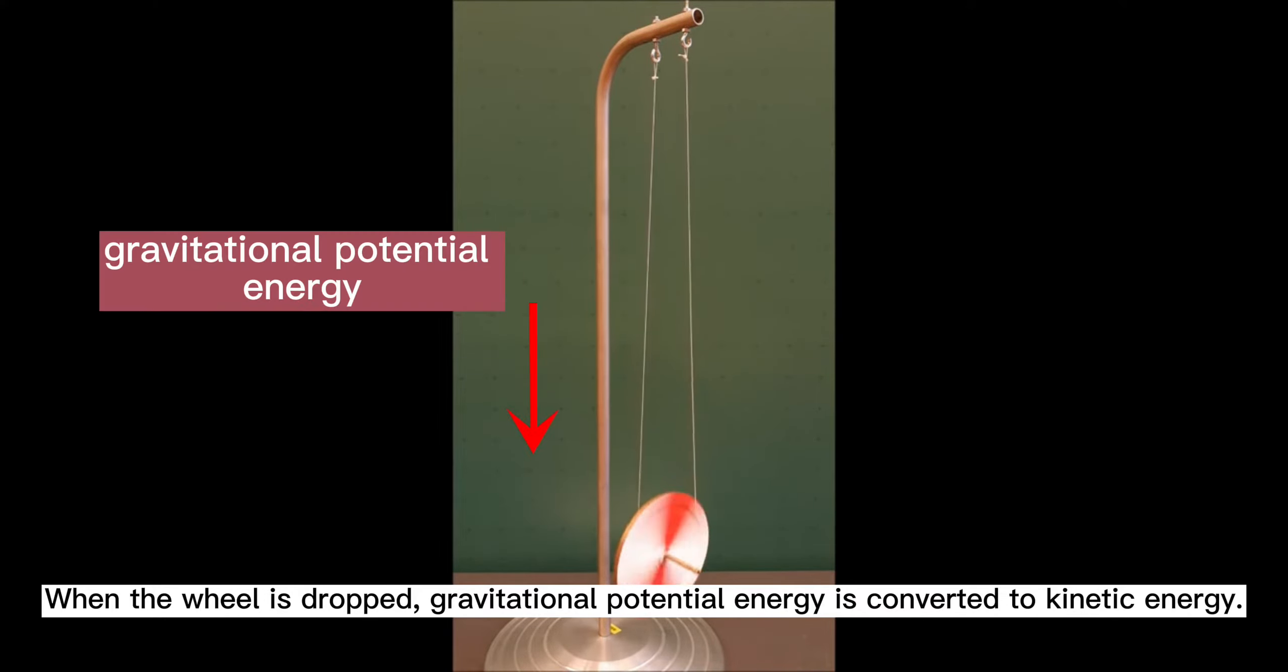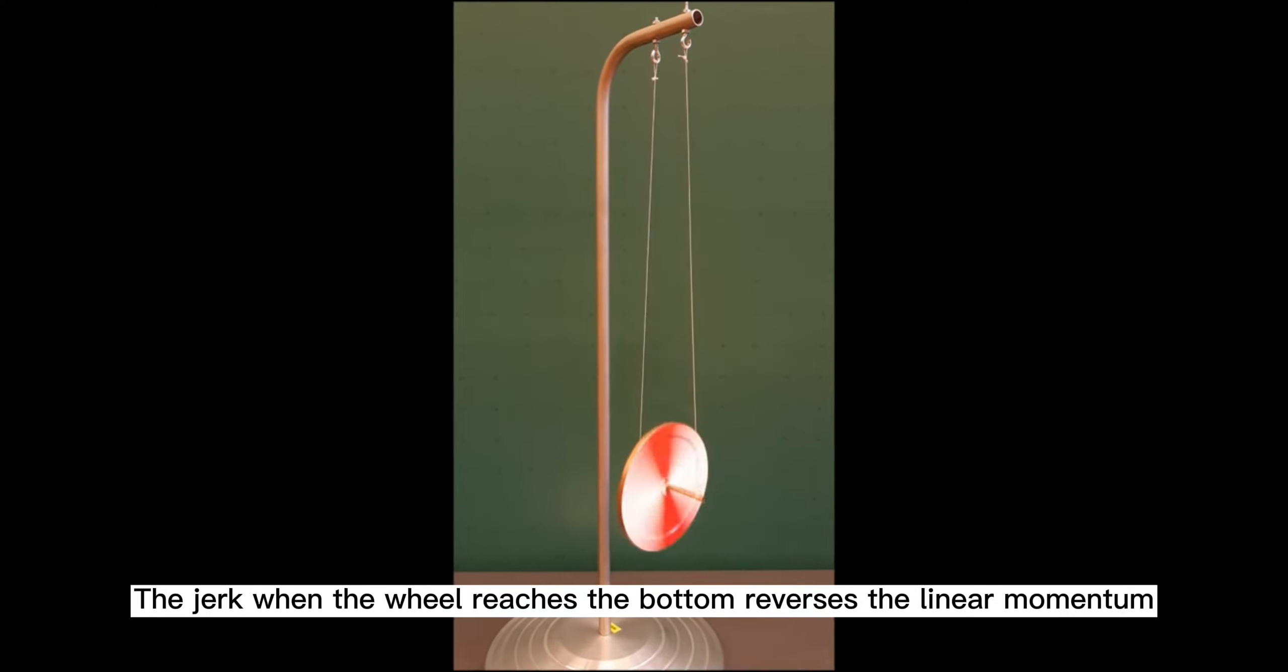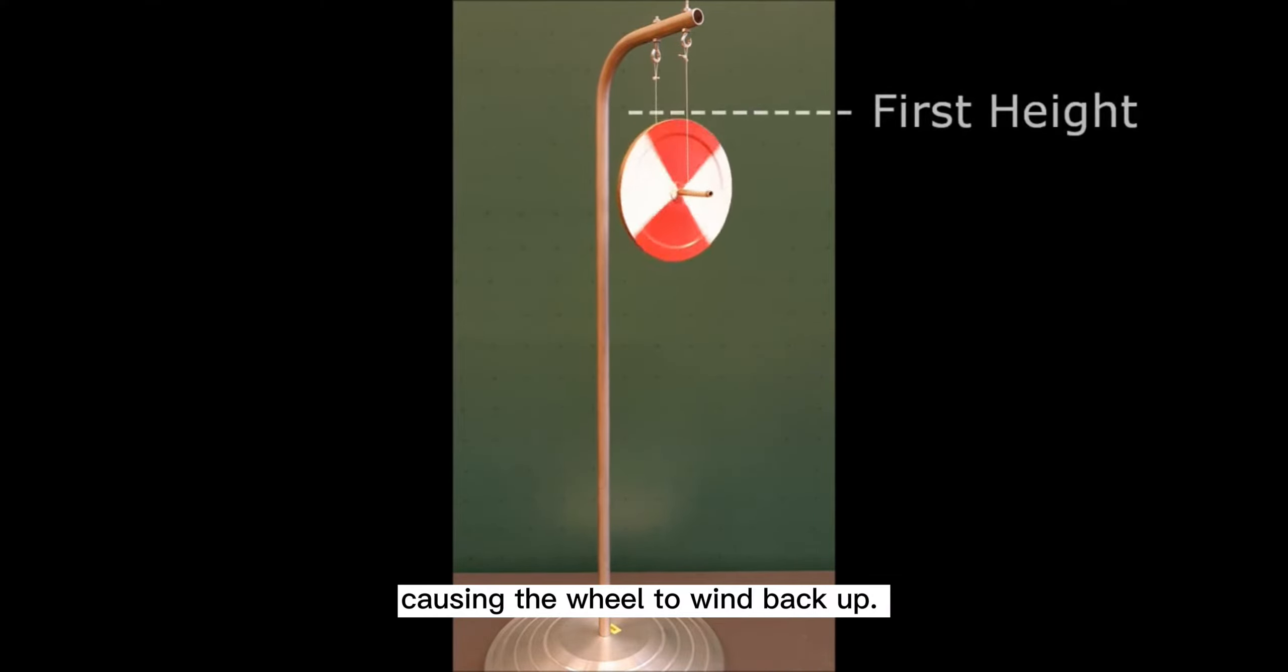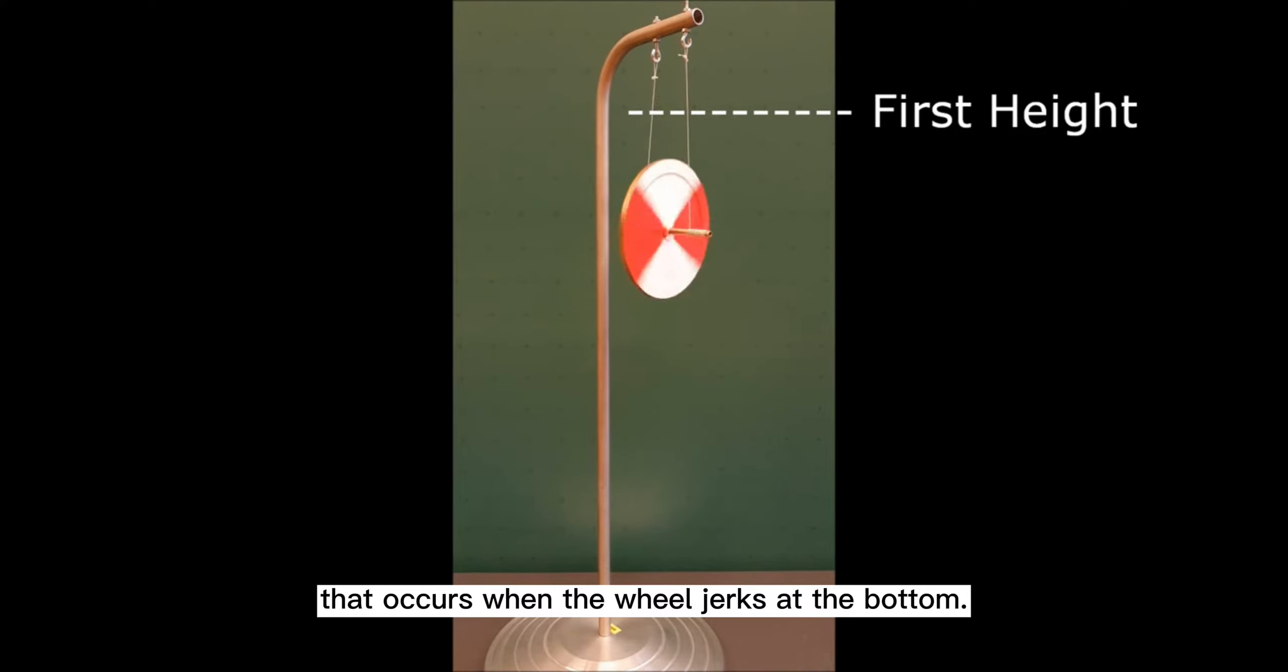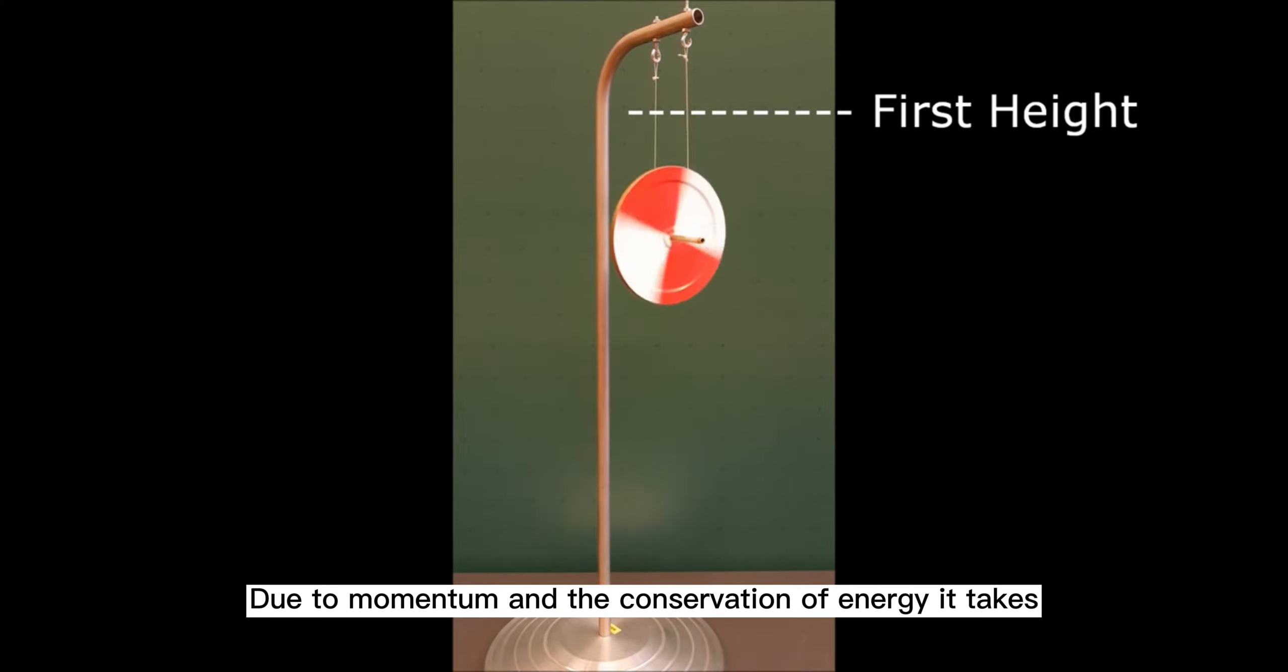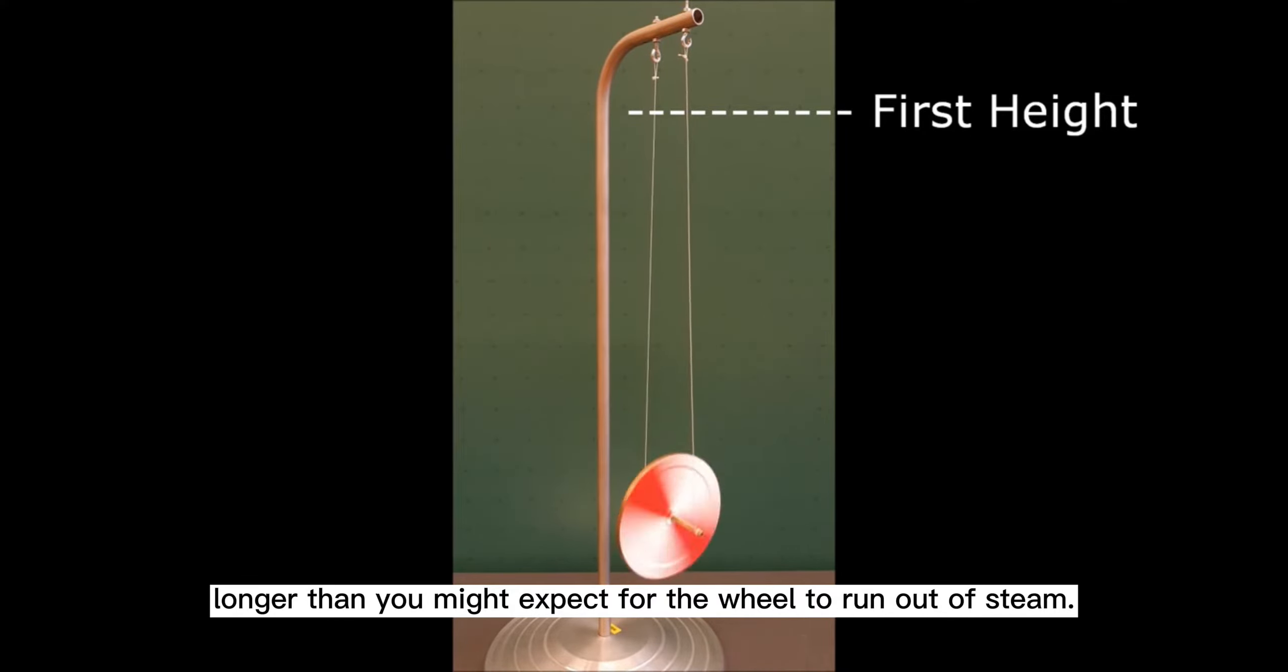When the whale is dropped, gravitational potential energy is converted to kinetic energy. The jerk when the whale reaches the bottom reverses the linear momentum, causing the whale to wind back up. A small amount of energy is lost each time due to the friction of the nearly elastic collision that occurs when the whale jerks at the bottom. Due to momentum and the conservation of energy, it takes longer than you might expect for the whale to run out of steam.